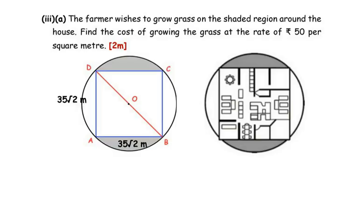To find the area of these two segments, there are two methods. The first and fastest method is to find the area of the circle and subtract the area of the square from it, giving the area of four segments, then divide by two to get the area of the two segments. The second method involves using the sector and triangle formulas. We will use the first method: area of circle minus area of square.